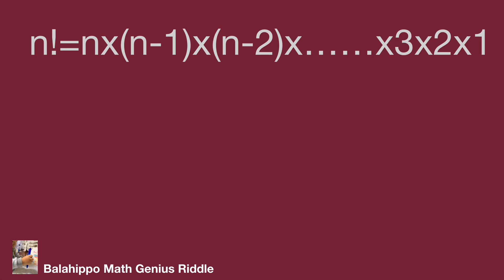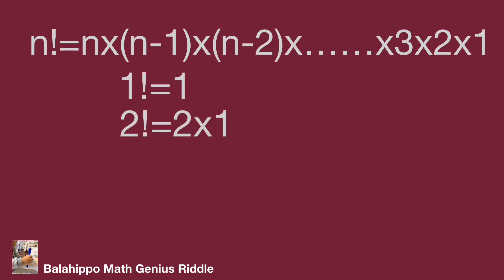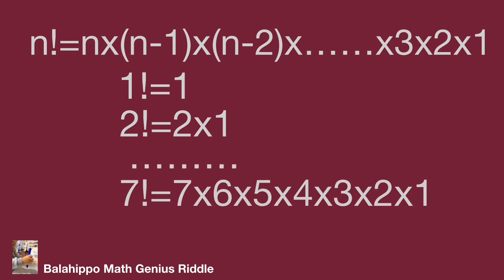For example: 1 factorial equals 1. 2 factorial equals 2 times 1. Same pattern: 7 factorial equals 7 times 6 times 5 times 4 times 3 times 2 times 1.